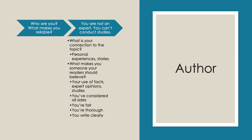Now I want to think about the rhetorical framework in a different way — how you might look at your own writing through this lens. On the topic of author: you're the author, so what makes you reliable? You're not an expert. You can't conduct studies like Brené Brown. You didn't write lots of novels like Anne Lamott. So how can you establish your reliability? Explaining your connection to the topic is always helpful, and then the things that make a reader believe you are the way you use facts — if you've considered all sides, if you're fair, thorough, and write clearly.